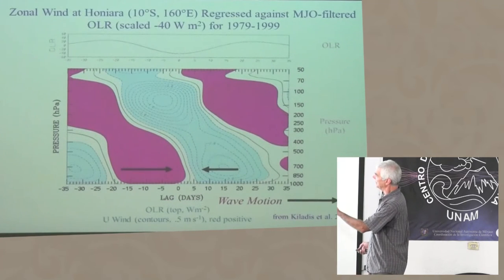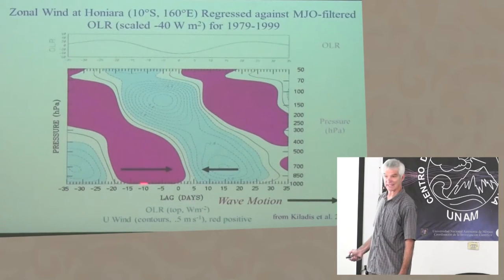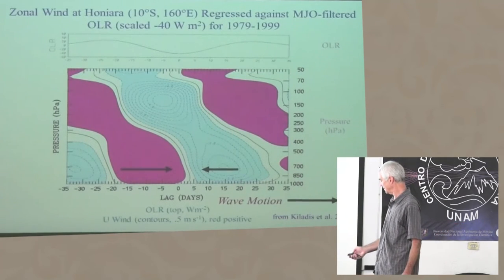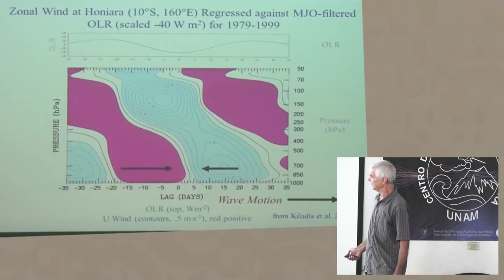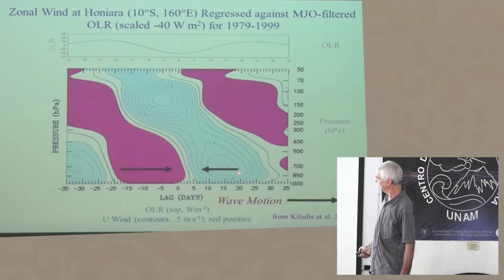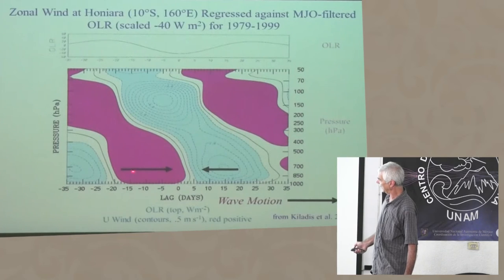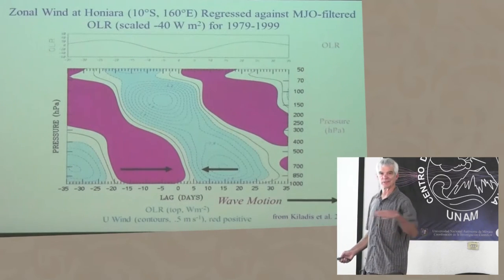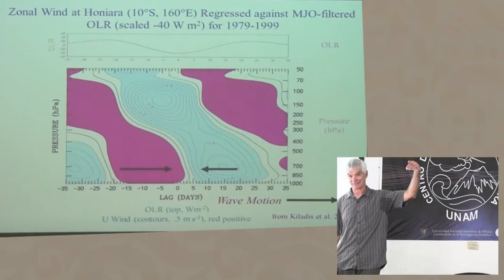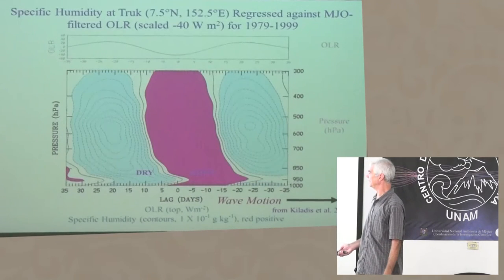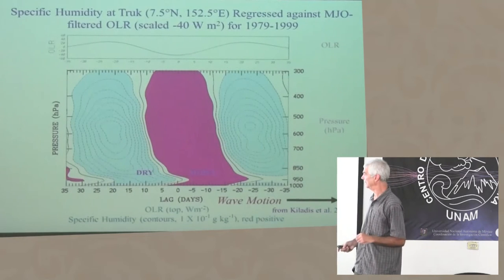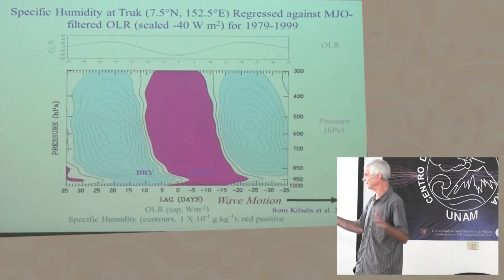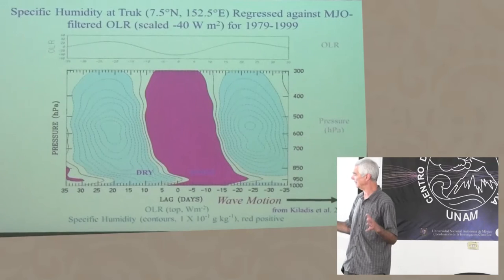The same analysis for the MJO spans about 70 days and represents nearly half the globe in spatial scale — truly planetary. We see a similar picture: easterlies ahead of the convective peak, westerlies following, and a westward tilt with height for this eastward moving wave. The westward moving waves tilt in the opposite direction. The mixed Rossby-gravity wave and westward inertia gravity wave all show very similar broad features.